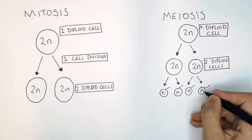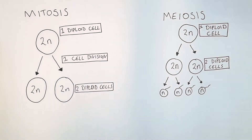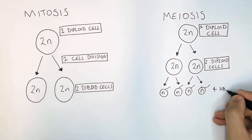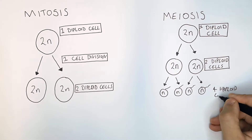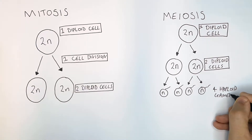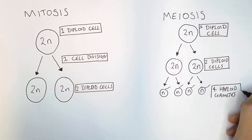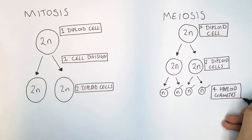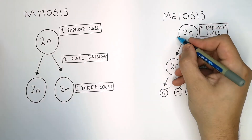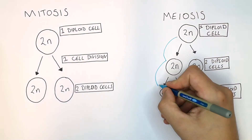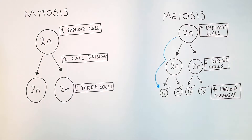Four haploid gametes are formed, each with one set of chromosomes. These haploid gametes are all genetically non-identical. So the cell divides once to begin with, and then a second time.